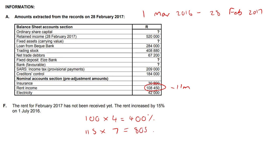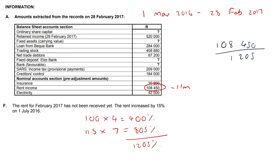So that comes to a total of 805%, which gives us a grand total of 1205%. Now, that 108,450 — if we divide that by this 1205 that we calculated, we're actually solving for just what 1% is. So plug that into your calculator and you should get 90 rands. That 90 rands represents 1%.